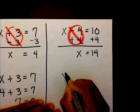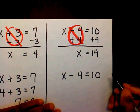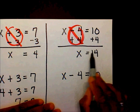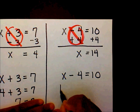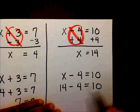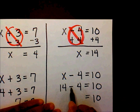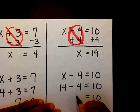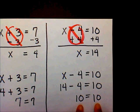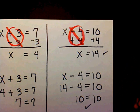I need to check my solution. I'm going to write down my original: x minus 4 equals 10. Right now I think that x equals 14, so I'm going to substitute the 14 for my x. On this side I have 10, and 14 minus 4 is 10. Since I end up with the same number on both sides, I know that the solution is correct and x equals 14.